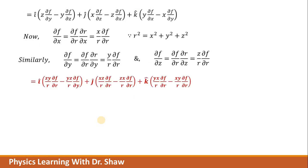Once you substitute, you will get curl of F is equal to i cap into zy/r del f/del r minus yz/r, and so on. Now look at here: in each term you will have the same quantity with positive and negative sign. It will cancel out and you will get finally curl of F is equal to zero.